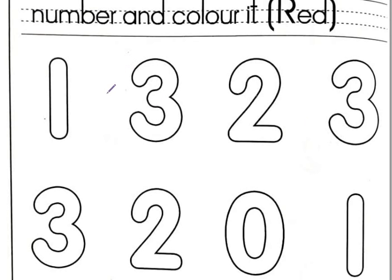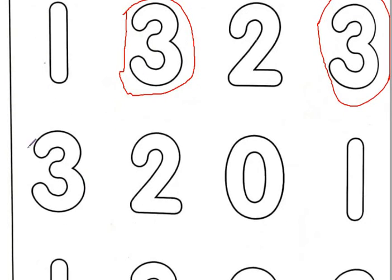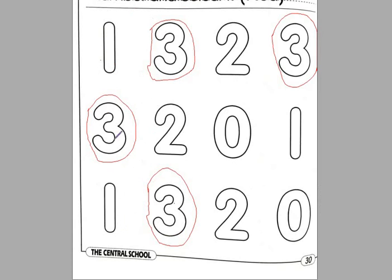Okay, now circle the number 3 like this. You have to circle number 3 and then color it red. Circle all the number 3s on page number 30. Here's this one also, and here's the last one. Like this you have to circle number 3 and color them red.